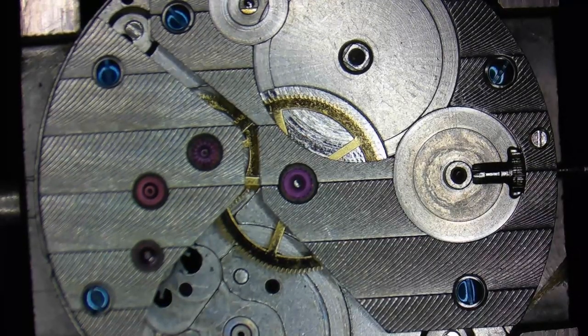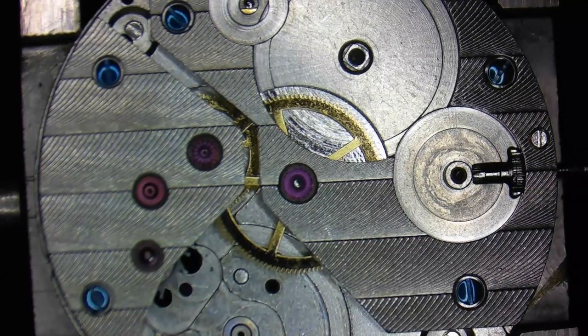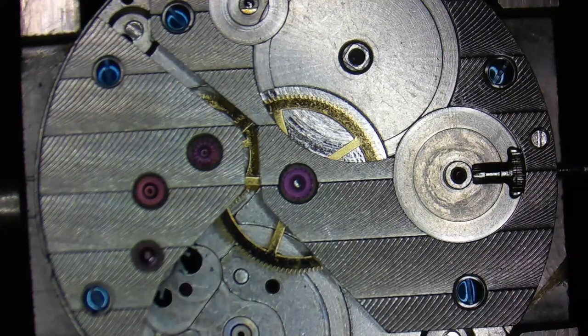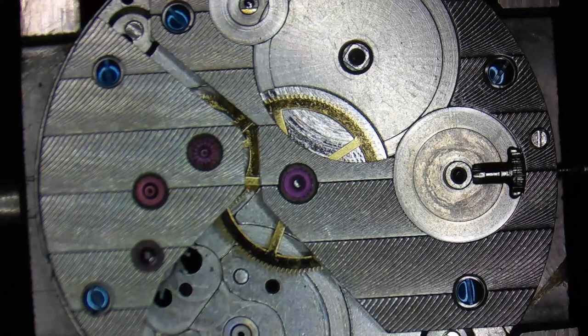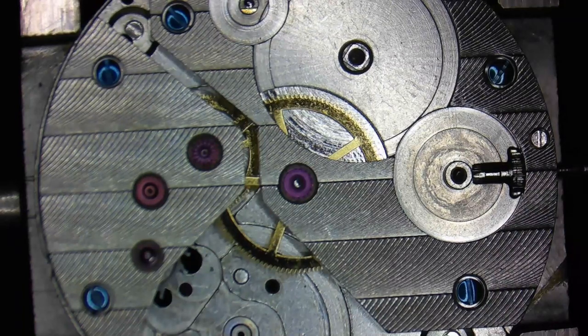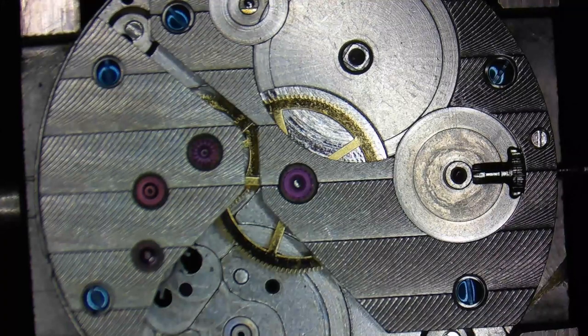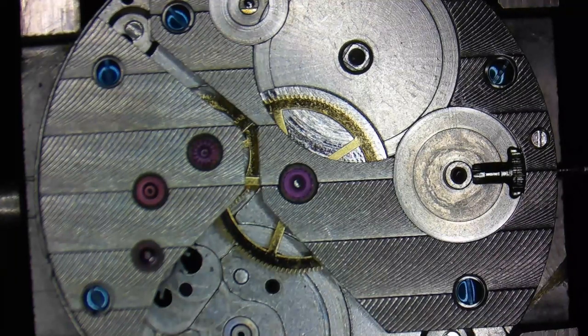When people talk about the balance wheel as being the heartbeat of a watch, the powertrain would be equal to the muscles, if you will. This is where all the power to run the watch comes from and it's extremely important that this is in good working order.